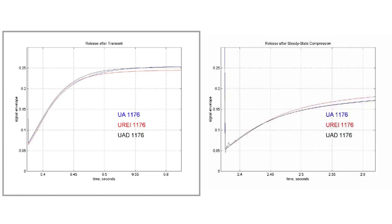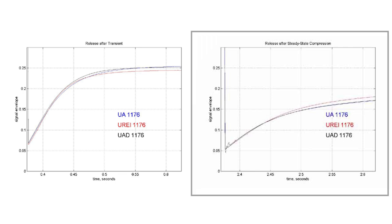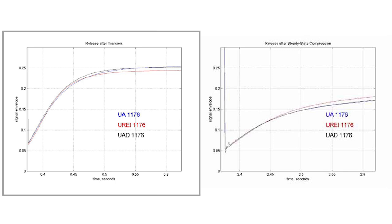The program-dependent release of the 1176 is also iconic. This means that the time it takes the compressor to stop compressing after a quick transient will be different from the release time after compressing a more tonal signal. The graph on the left shows the release time after a transient input signal, compared to the graph on the right which shows the release time after a steady-state or tonal signal. Notice that the release is much more gradual after a steady-state input, compared to the release time after a transient input.